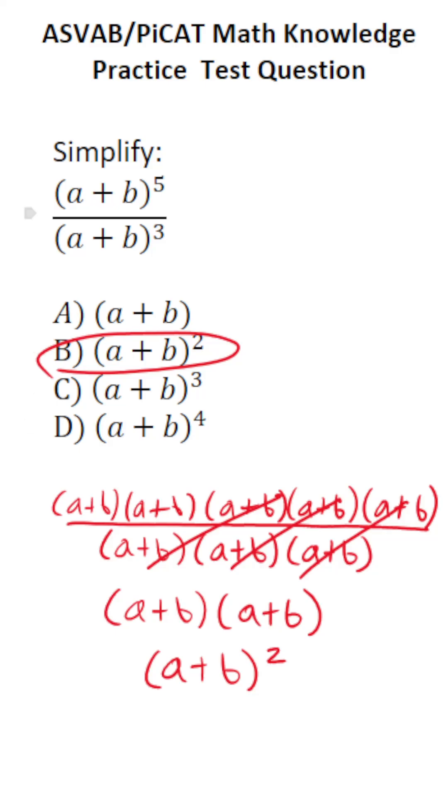If you wanted to use the laws of exponents, notably the quotient rule, again, the quotient rule says if you have a to the m over a to the n, you simply subtract our exponents to be a to the (m - n).